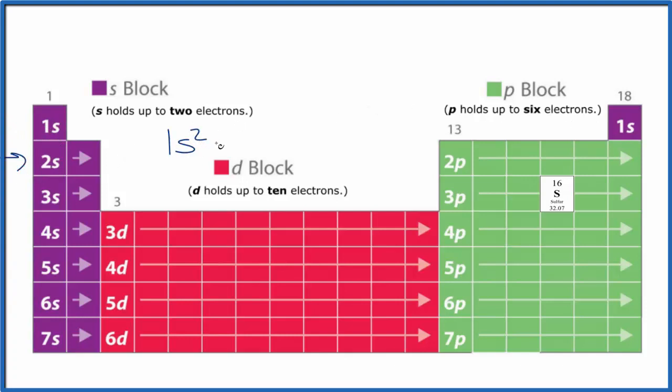We then go to the second energy level, 2s, 1, 2. Then we go over to p. We have 2p, 1, 2, 3, 4, 5, 6 p orbitals. They hold up to 6.